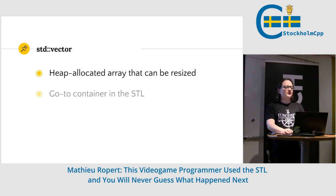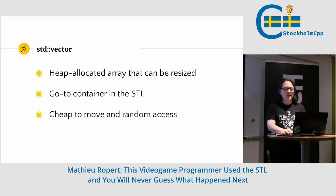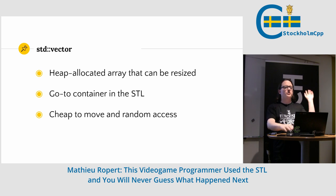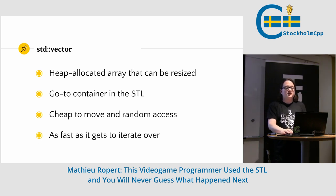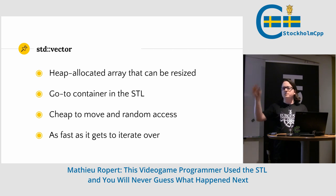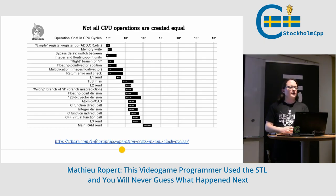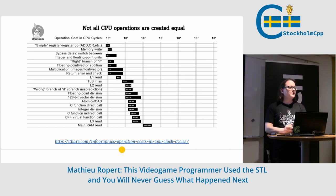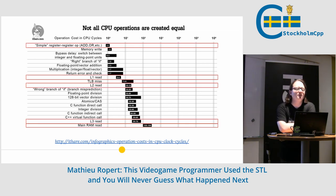We're going to talk about the most used containers: arrays, dynamic arrays, and associative containers — ordered and unordered. Vector — we all know vector. It's the go-to container. If you don't want to think, you put a vector. It's cheap to move because you just move a pointer. It's cheap to random access. And it's as fast as it gets to iterate over because since it's an array in memory, you get all the caching mechanisms of modern CPUs.